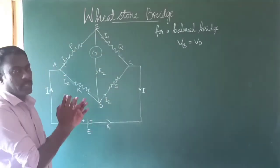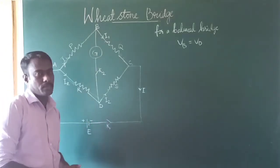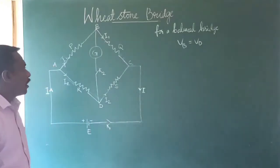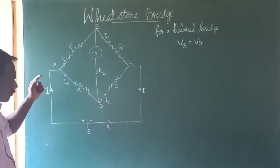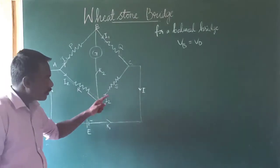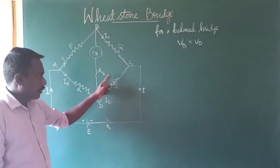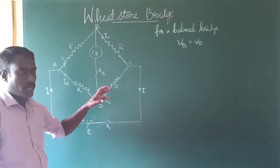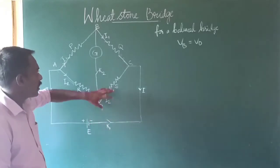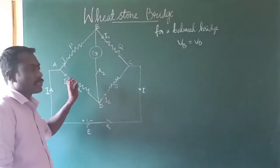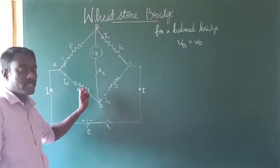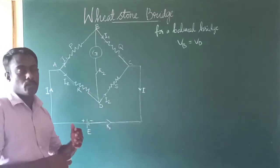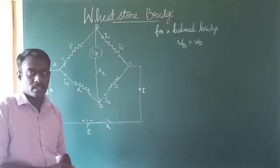When the bridge is in balanced condition, if one of the four resistances is unknown and the other three resistances are known, we can calculate the value of the unknown resistance. This is the principle and purpose of using the Wheatstone bridge.